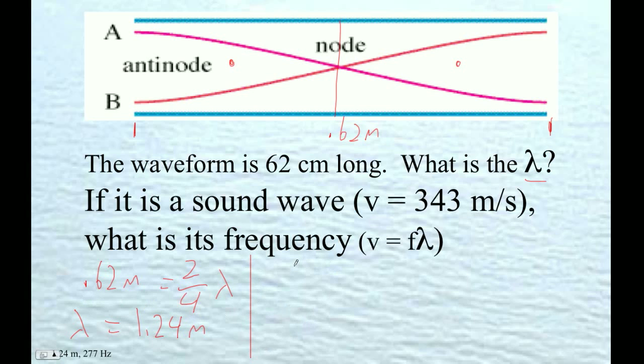Okay, and now we can do V equals F lambda, right? So 343. This is sound. The wave speed is 343 if it's sound, right? If it's 20, what, 20 degrees Celsius, one atmosphere, something like that, okay?